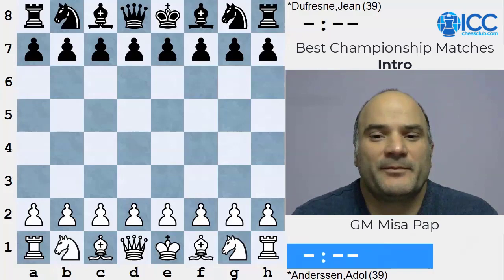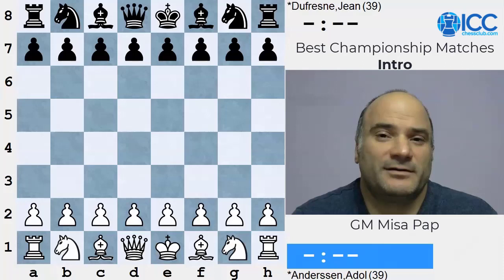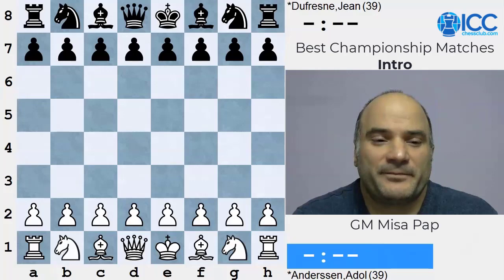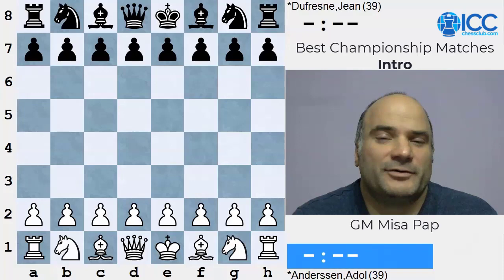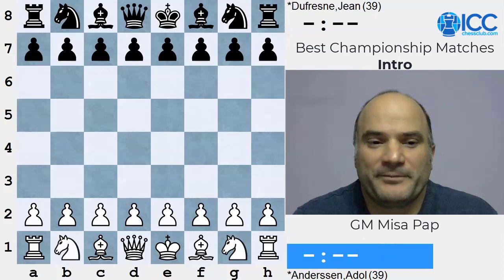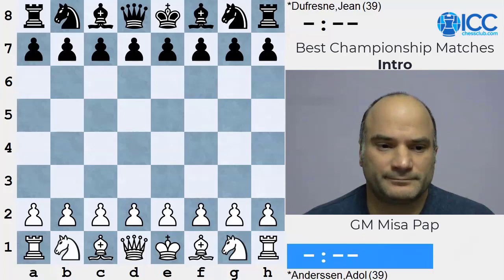Then things become interesting, because in the meantime, the amazing player Paul Morphy appeared. Even the famous Robert Fischer said he thinks Paul Morphy was the best of all time. And who knows, maybe he even was - because in 1858, Paul Morphy came from America, from the United States, to visit Europe. He played matches with all the best players, beating them one by one. He won against Andersen 7-2 with only two draws.